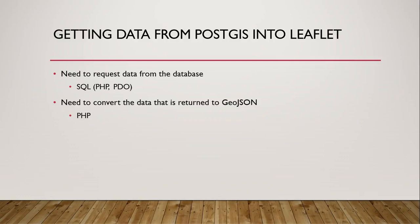PHP is very fortunate for us here because we also use it to send the SQL request to the database. PHP has tools that allow us to loop through the returned data one record at a time, and each record can be converted to a GeoJSON feature. We could manually add all the curly brackets, colons, commas, and square brackets to create valid GeoJSON, but it's a lot easier to use associative arrays as an intermediate step. Associative arrays serve the same purpose in PHP that JavaScript objects do in JavaScript — they contain data in the form of key-value pairs.